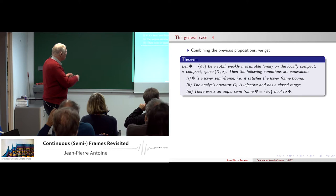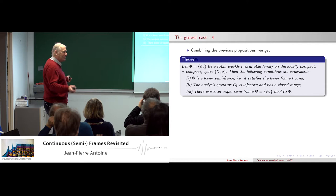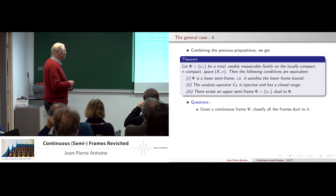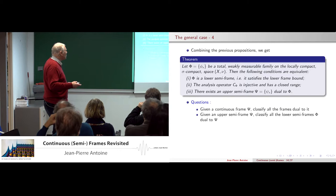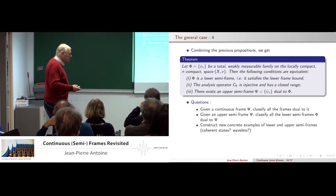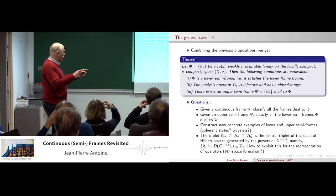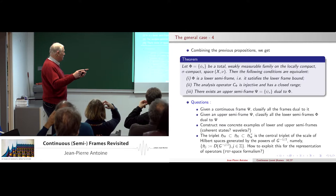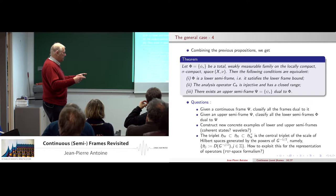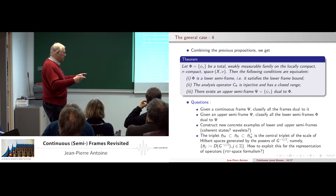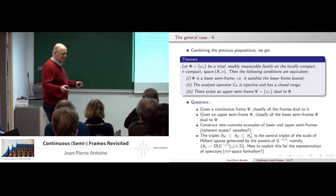This just puts three propositions together. Now, lots of open questions — some impossible to answer: classify frame duals to a given frame, classify lower semi-frames dual to a given upper semi-frame, construct new examples. We have two examples but it would be nice to have more. We have these three Hilbert spaces built on powers of G to the minus one-half. The three inner products have G minus one, identity, and G plus one. This is essentially the graph norm of G to the minus one-half, one, plus one-half. You iterate to get an infinite scale — what can you do with that?